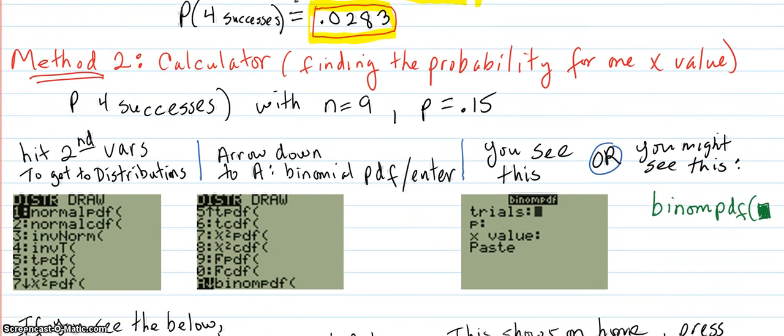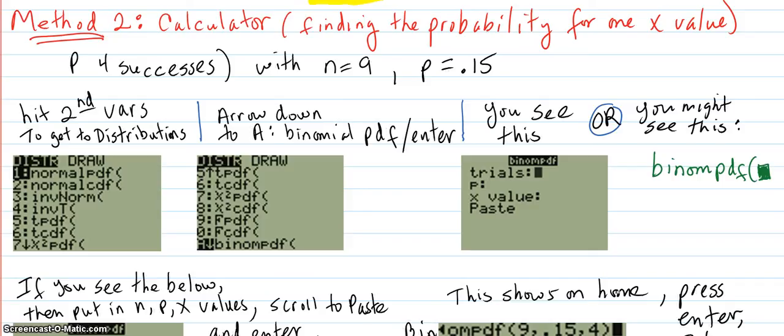Method two is a pure calculator method. We're going to find the probability for one x value, and it's going to be four successes. We still have the same trial number, nine, and the same probability of success each time, which is .15. So you hit second VARS, which is really distributions, and you get this menu there. Then you scroll down or arrow down to binomial PDF. That's this one. And enter.